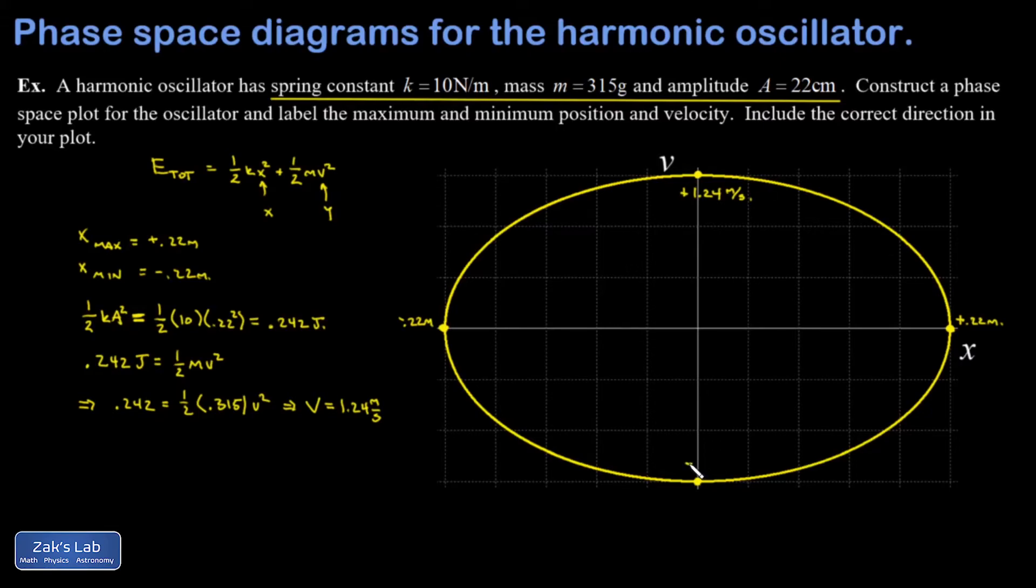At the bottom of the ellipse, that velocity is negative, but the speed is going to be the same value. At that moment, the oscillator is moving to the left.